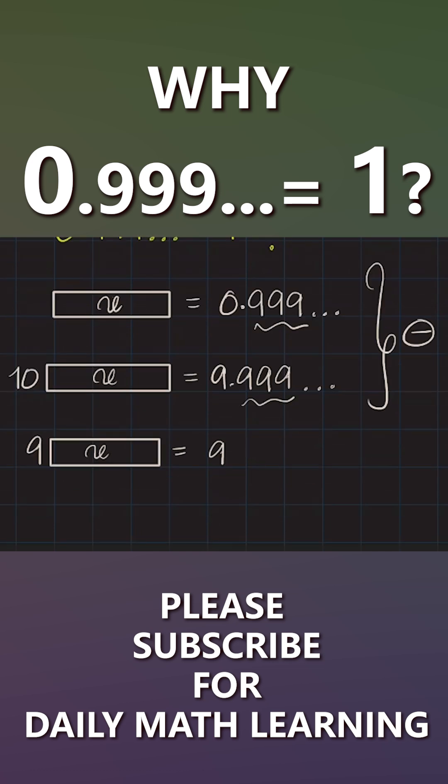Giving you 9 times x equals to 9 or 9 times x equals to 9 giving you x equals to 9 upon 9. Answer is 1.